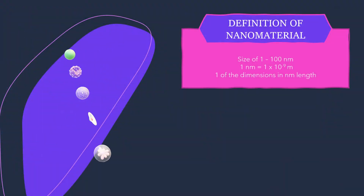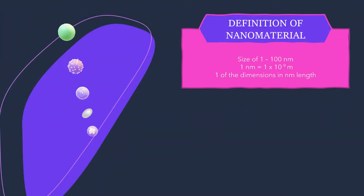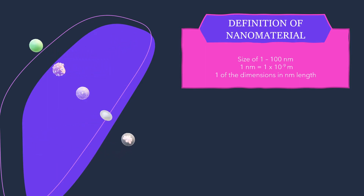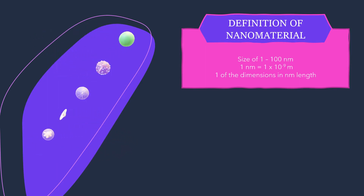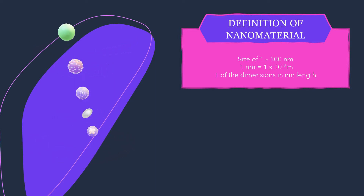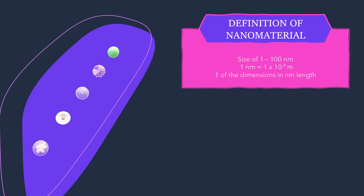By definition, nanoparticles are solid particles with a size in the range of 1 to 100 nanometers. Therefore, a nanomaterial is a class of materials with at least one of the dimensions in the nanometric range — for example, metals, ceramics, polymers, or composites.